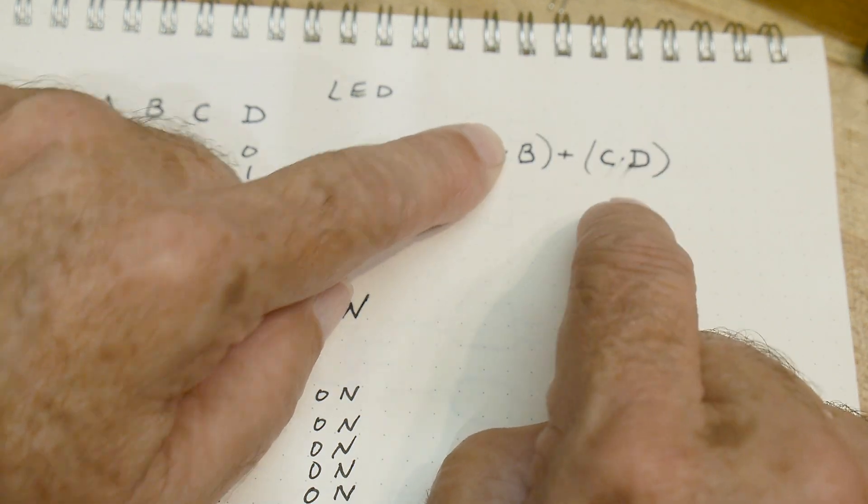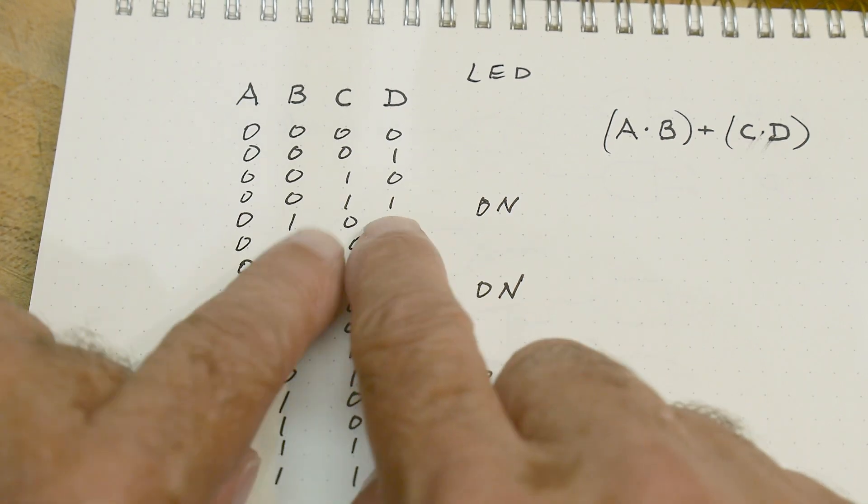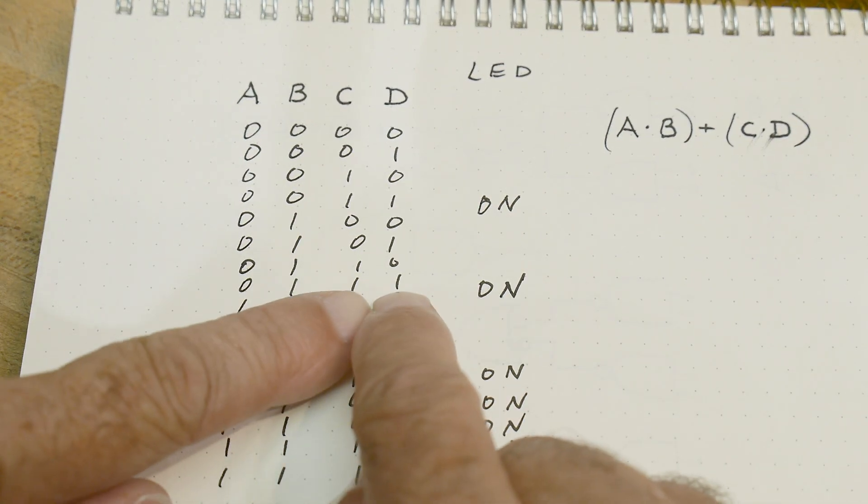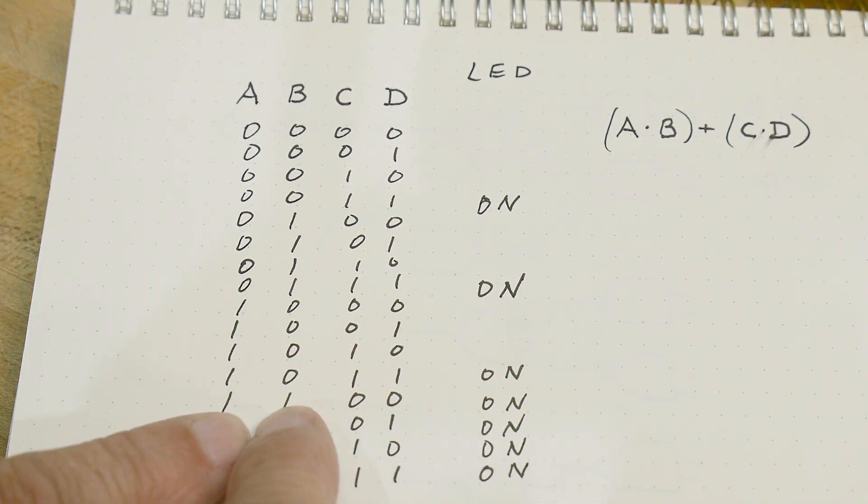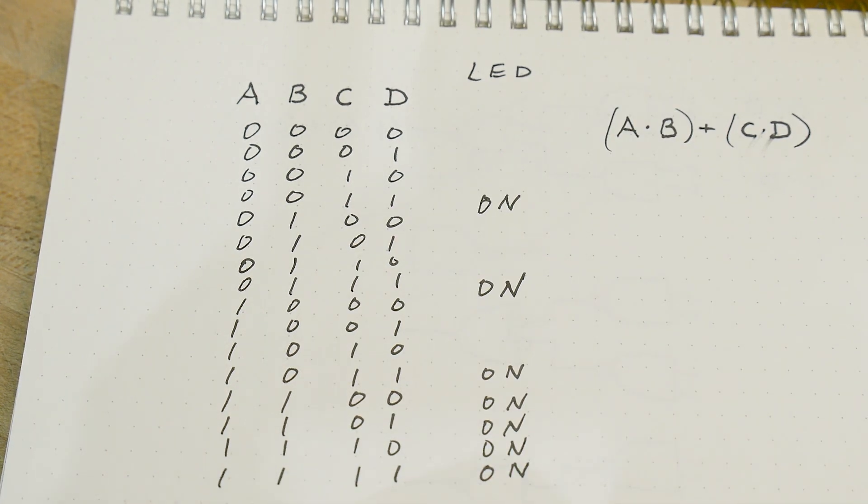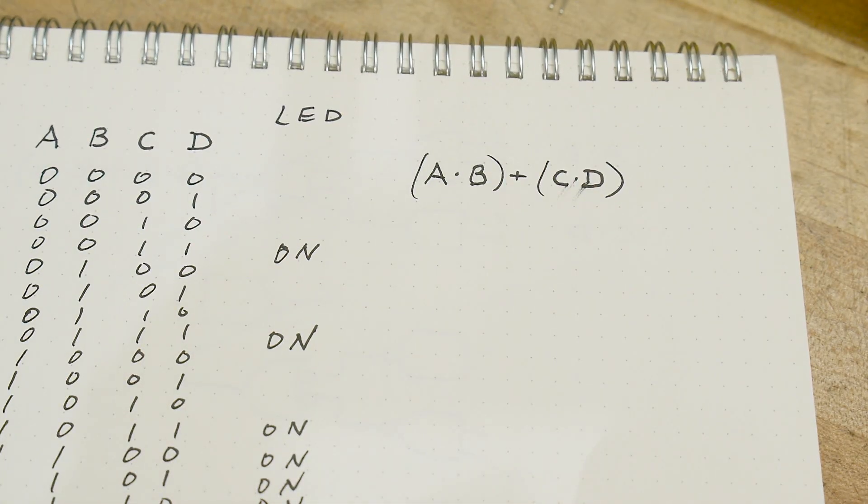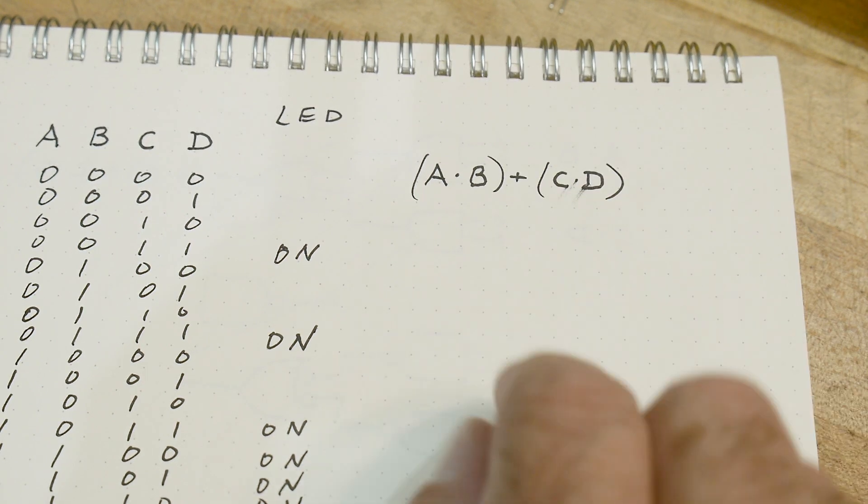Okay, so this says that if either A and B are high or C and D are high, turn the LED on. Let's see if that's true. Here C and D is high, turn it on. C and D is high, turn it on. A and B is high, turn it on. A and B is high, turn it on. It doesn't matter because it's an OR function, right? And so this is the equation that we want to accomplish: A AND B OR C AND D. This is Boolean algebra.